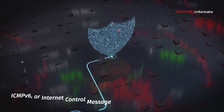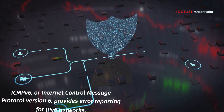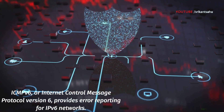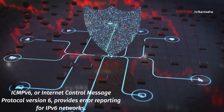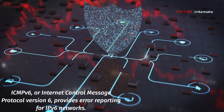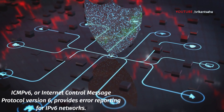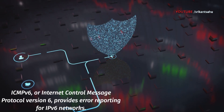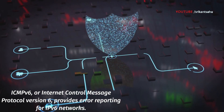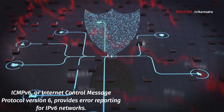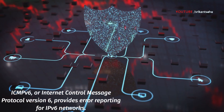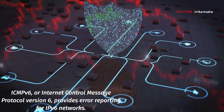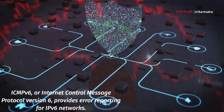ICMPv6, Internet Control Message Protocol version 6, provides error reporting for IPv6 networks, similar to ICMP for IPv4. It includes functionalities such as neighbor discovery, essential for IPv6 address resolution and network maintenance. ICMPv6 messages do not use ports; instead, they are identified by specific types and codes within the ICMPv6 header.